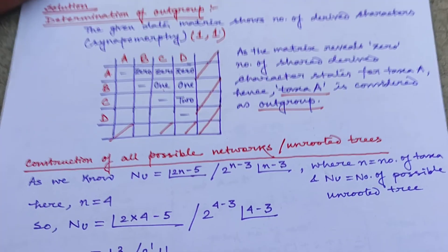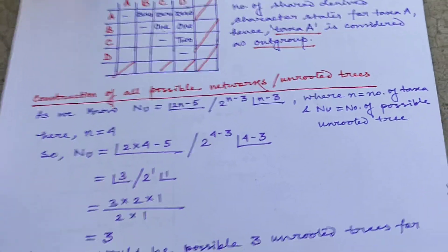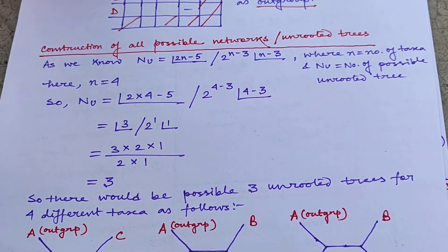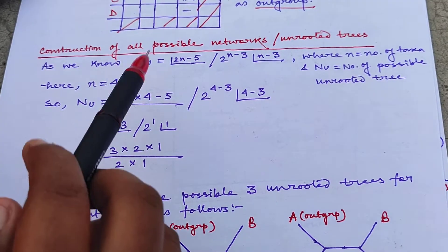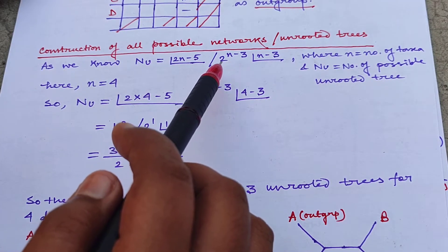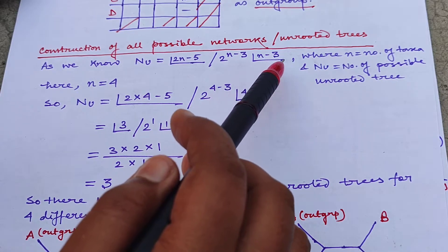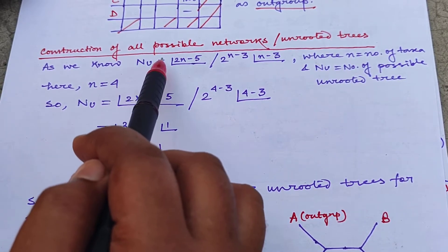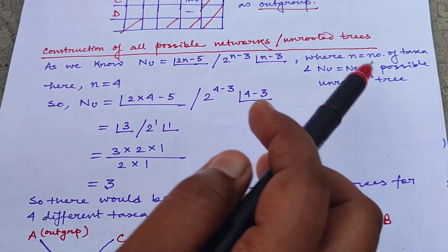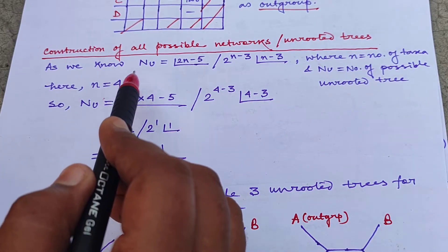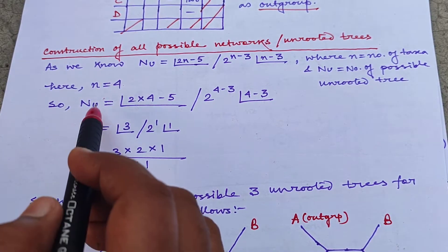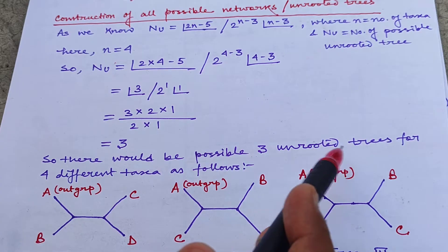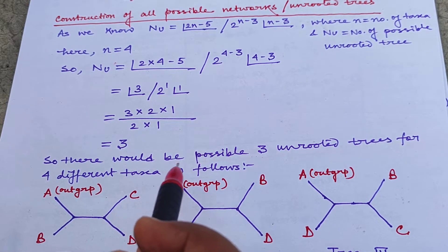Now coming to construction of possible number of networks or unrooted trees. There is a formula: NU = (2N−5)! / [2^(N−3) × (N−3)!], where N is the number of taxa and NU is the number of possible unrooted trees. Here N = 4 (taxa A, B, C, D), so NU becomes 3. There would be only 3 possible unrooted trees for the 4 different taxa given above.